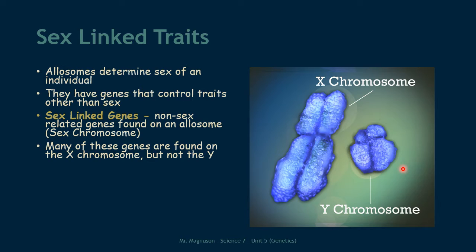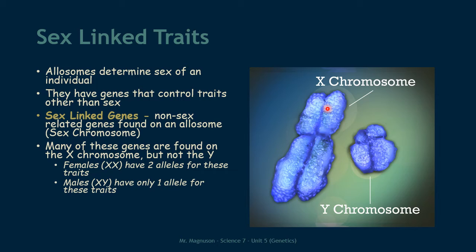Because many of these genes are found on the X chromosome and not the Y chromosome, there is a difference in how many alleles a person will have for these genes. Normally, because we have two copies of each chromosome in our cells, we have two alleles for any given trait — whether it is height, eye color, or hair color. If you are female and have two X chromosomes, you will still have two alleles for each of these traits. But if you are male with an X and a Y, you will probably only have one allele, because it is on your X chromosome and not your Y chromosome.